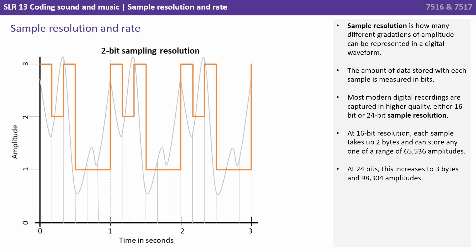Sampling resolution is how many different gradations of amplitude can be represented in a digital waveform. This is the amount of data stored with each sample and we measure it in bits. Most modern digital recordings are captured in higher quality, either 16-bit or 24-bit sample resolution. At 16 bits, each sample takes up two bytes and can store any one of 65,536 different amplitudes. At 24 bits, this increases to three bytes per sample, being able to store up to 98,304 amplitudes.